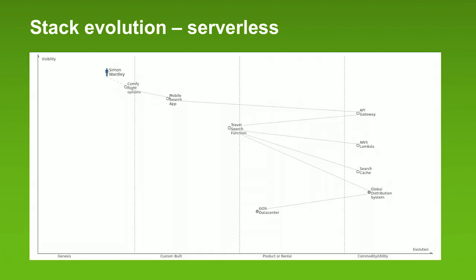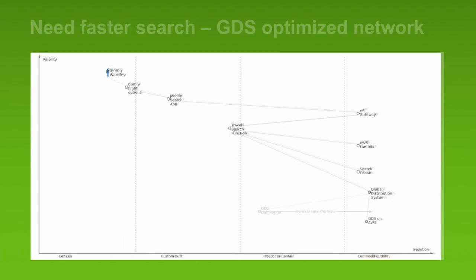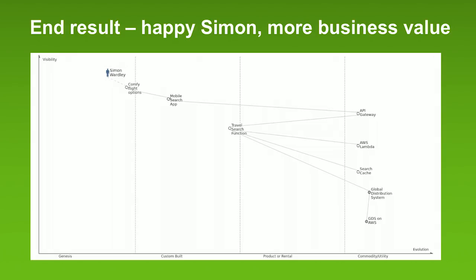So let's look at optimizing the next level. We can take the global distribution service, which is currently running in a data center somewhere quite far away from the AWS service region where we're running the new search application. However, this GDS service is portable enough that it can be relocated to run in multiple data centers or cloud providers. So what we can do is relocate it to run in the same region as the rest of the AWS service. Now the search application is connected to this other service by internal networks within a region, which are incredibly high bandwidth and extremely low latency. This gives you a very fast front end and a very fast ability to get into the global distribution system and search it.